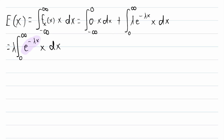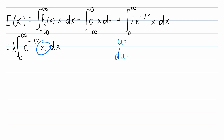We've got the product of two functions — an exponential function and a linear function x — and we don't really know how to integrate this product directly. This is a typical situation where we'll use integration by parts to get an integral we can evaluate. We'll let one function be u, take its derivative to find du, let the other be dv, and integrate it to find v.